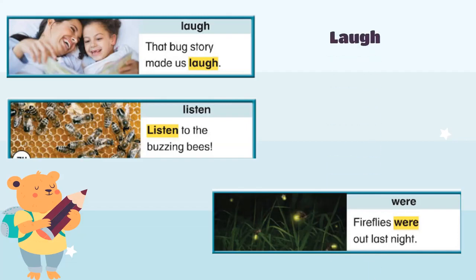That bug story made us laugh! The fourth word is 'laugh.' Can you see — maybe it's the mother or the big sister with that little girl? They were reading a story and laughing. The GH letters together with A make the F sound, which gives us 'laugh.' Read it together: 'laugh.'